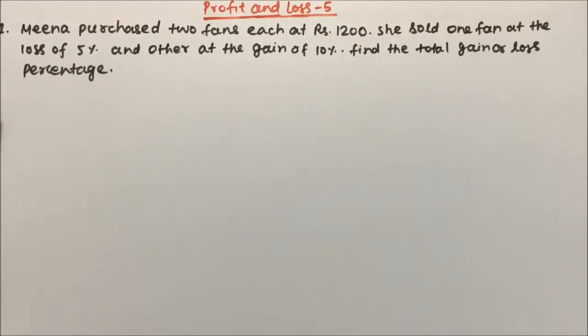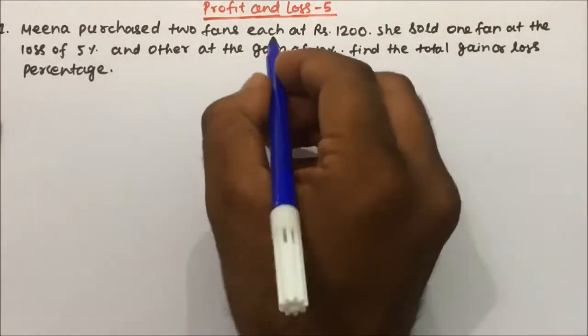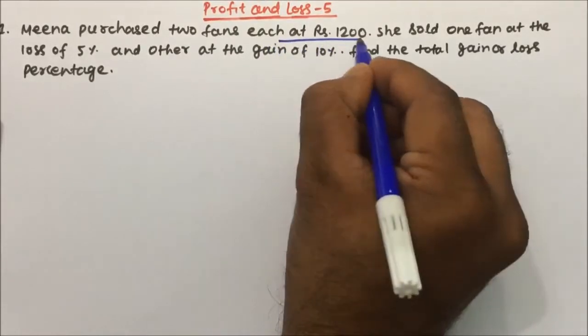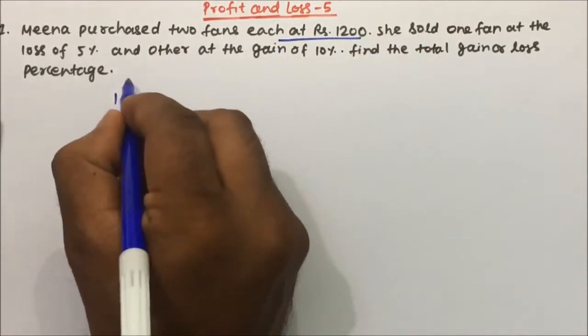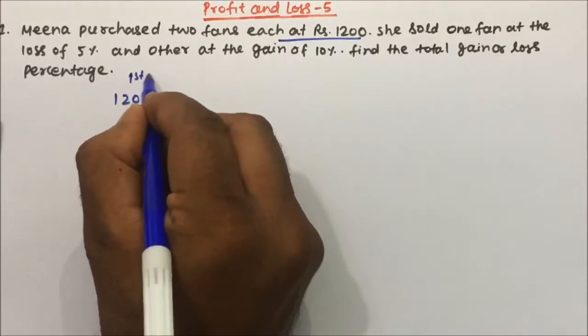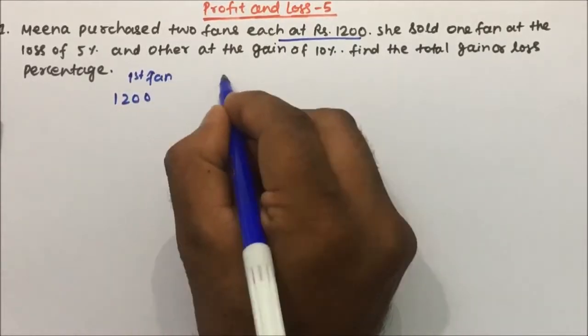Hi friends, our today's topic is profit and loss. In this video we are going to learn a few very important questions which frequently come in our exam. The question is: Meena purchased two fans each at rupees 1200. She purchased two fans, so suppose first fan this is, and this is second fan.